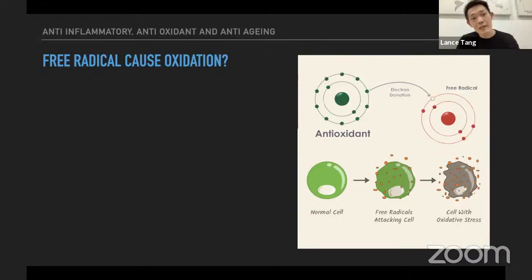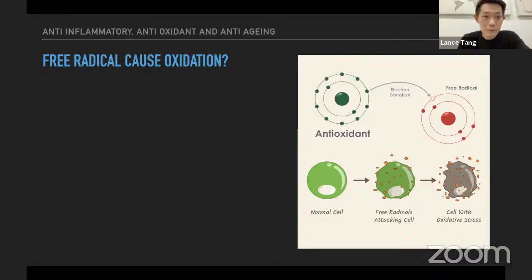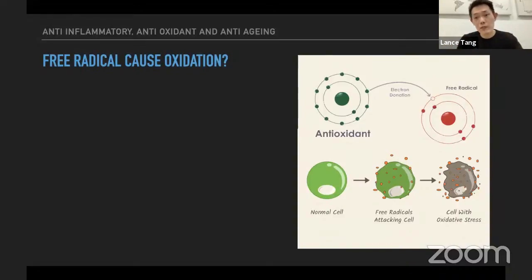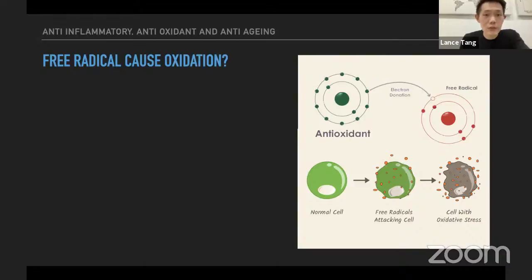This is actually what happens to our cell membrane — whenever the outer layer keeps being attacked by free radicals, it goes out of shape. The moment it goes out of shape, the fluid inside is destroyed, along with the nucleus and DNA inside. This is happening at the molecular level, but it's not just happening in one cell.